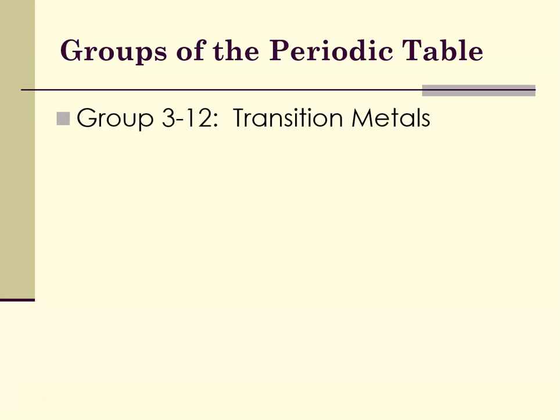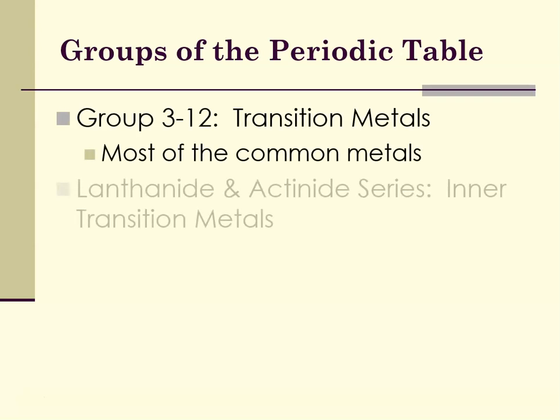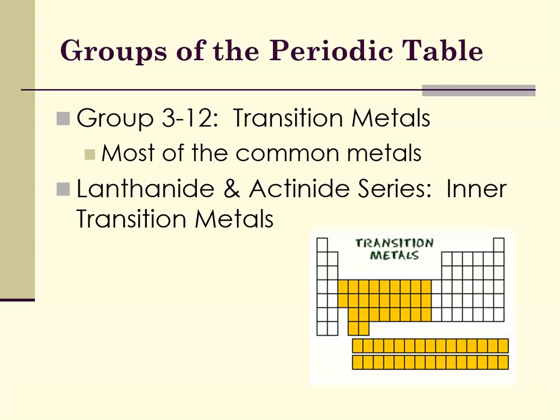Groups 3 through 12 are the transition metals, and most of them are the ones you commonly think of as metals. The lanthanides and actinides are the inner transitions located down at the bottom of the periodic table.